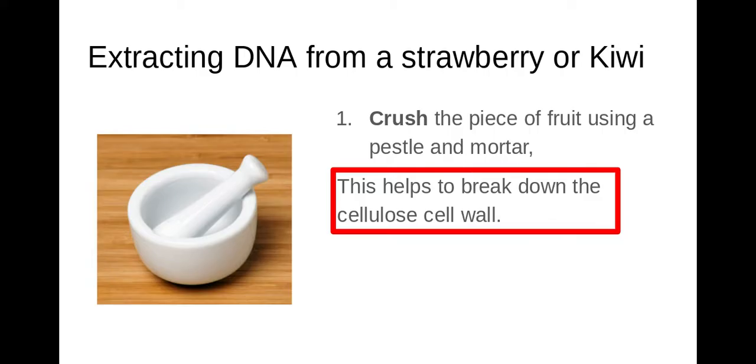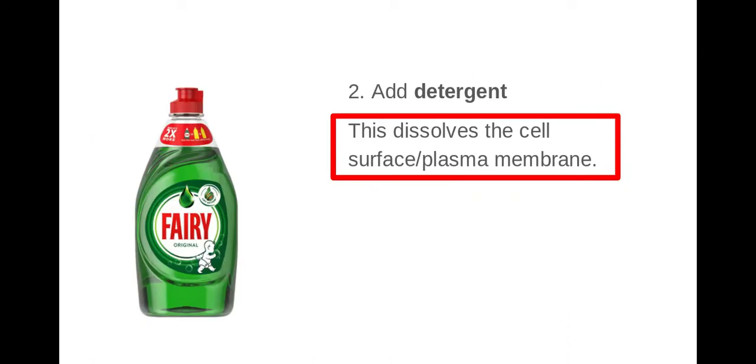After you've broken down the cell wall and created a mush with your fruit, you're going to add detergent such as fairy liquid or another washing up liquid. What this does is it dissolves the cell surface or plasma membrane. Again, anything in a red box is taken directly from the mark scheme.